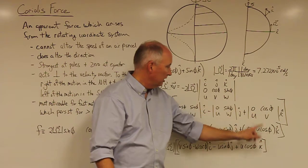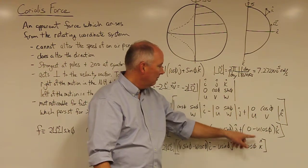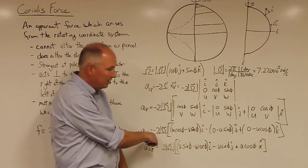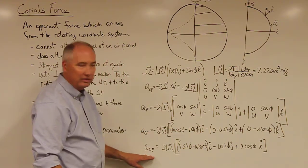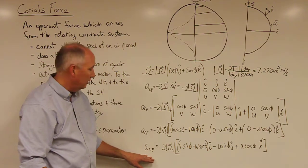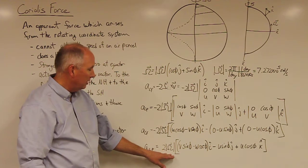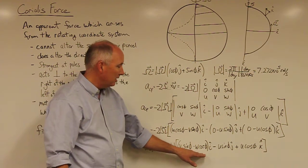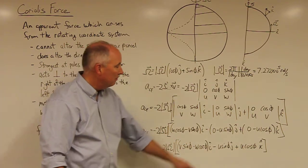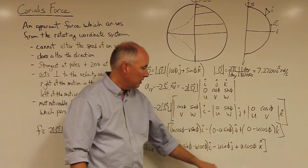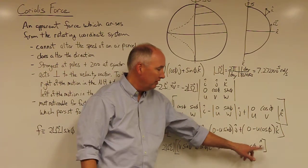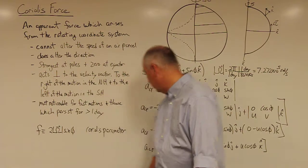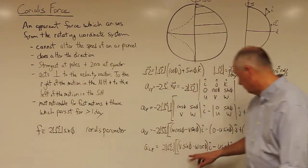And so that's going to be zero times v minus u times cosine φ. If you take this minus sine and distribute it in here, you'll end up with the actual expression for the Coriolis acceleration. Which is two times the magnitude of the angular velocity, v sine φ minus w cosine φ in the i-hat direction, minus u sine φ in the j-hat direction, plus u cosine φ in the k-hat direction.